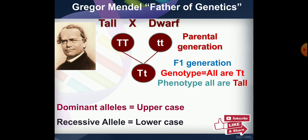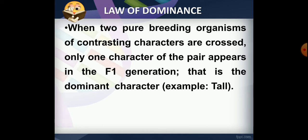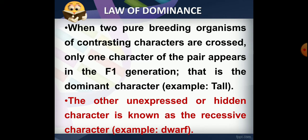The law of dominance states that when two pure breeding organisms of contrasting characters are crossed — capital T capital T (tall) crossed with small t small t (dwarf) — only one character of the pair appears in the F1 generation. The F1 generation is expressed as tall. The expressed character is dominant; the hidden character is recessive.